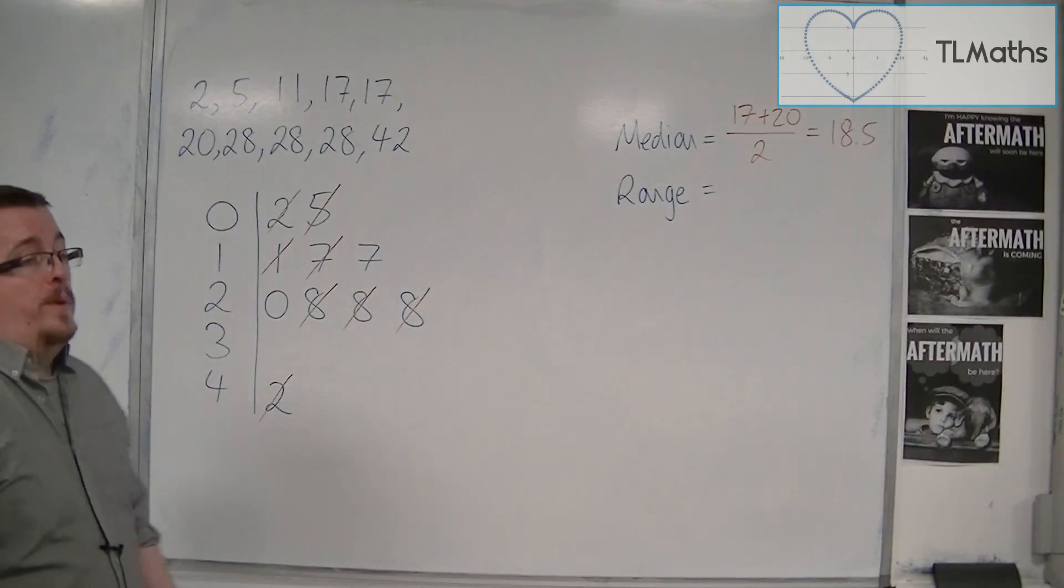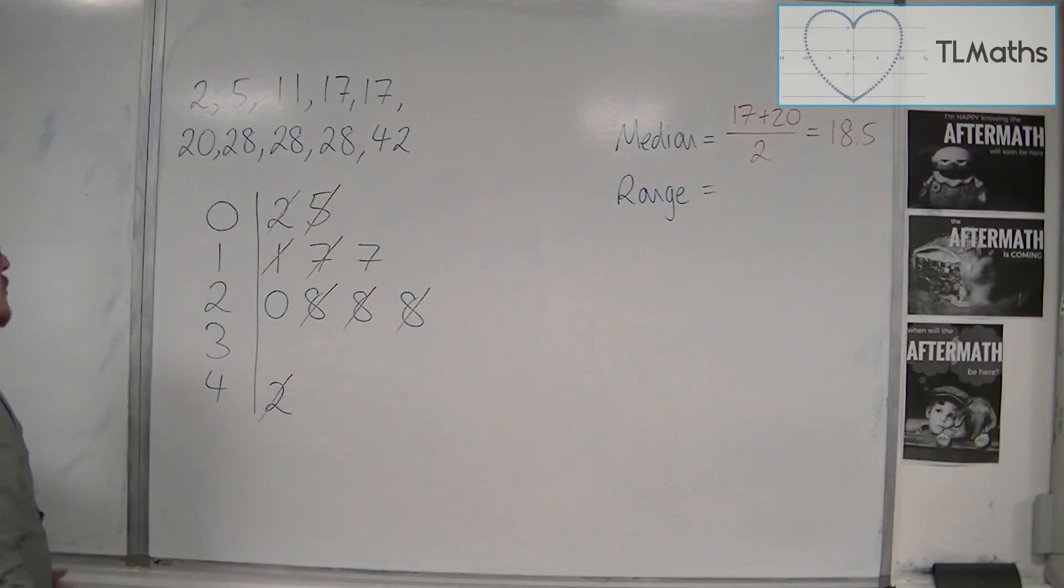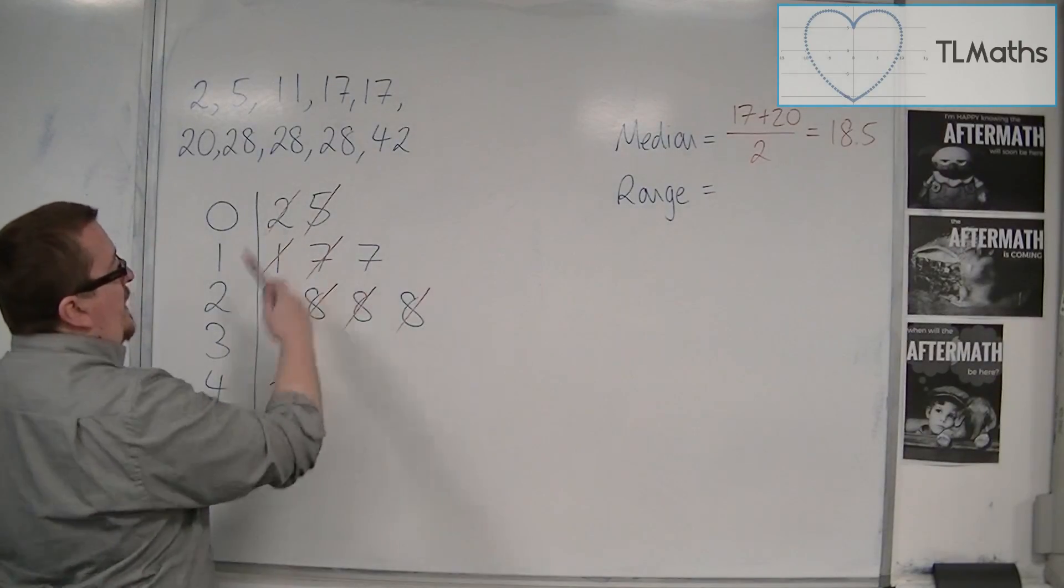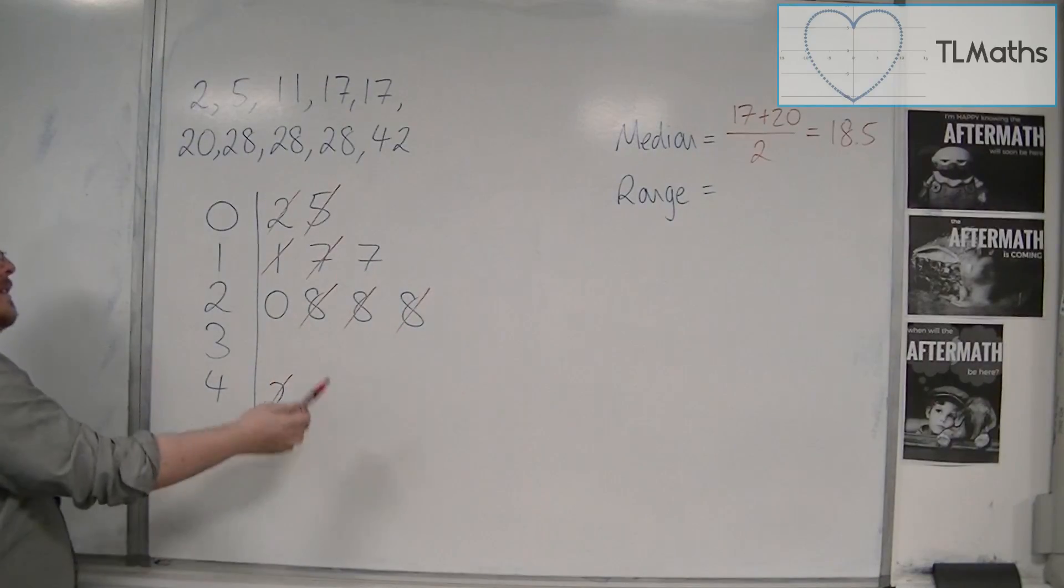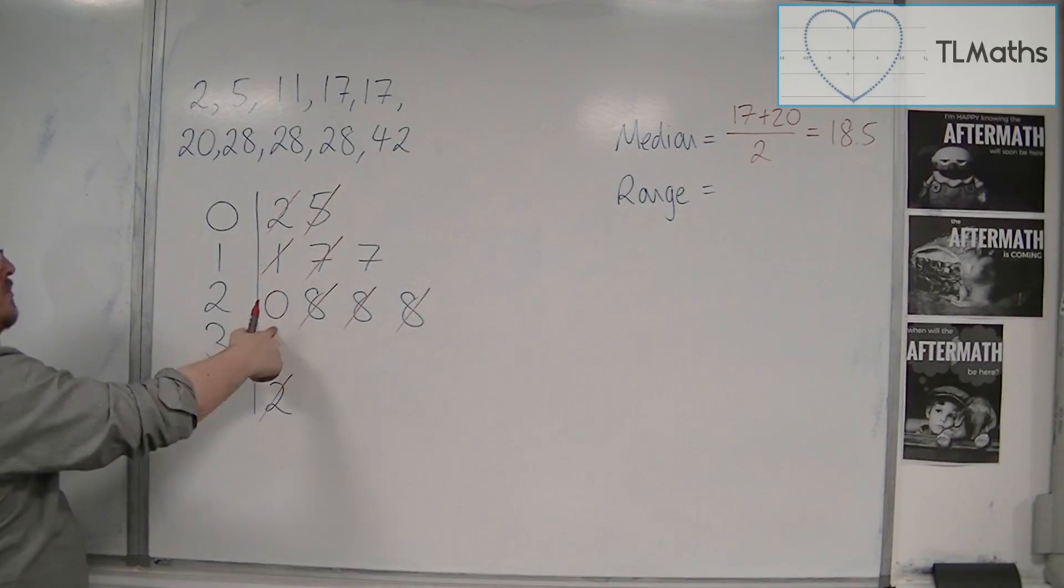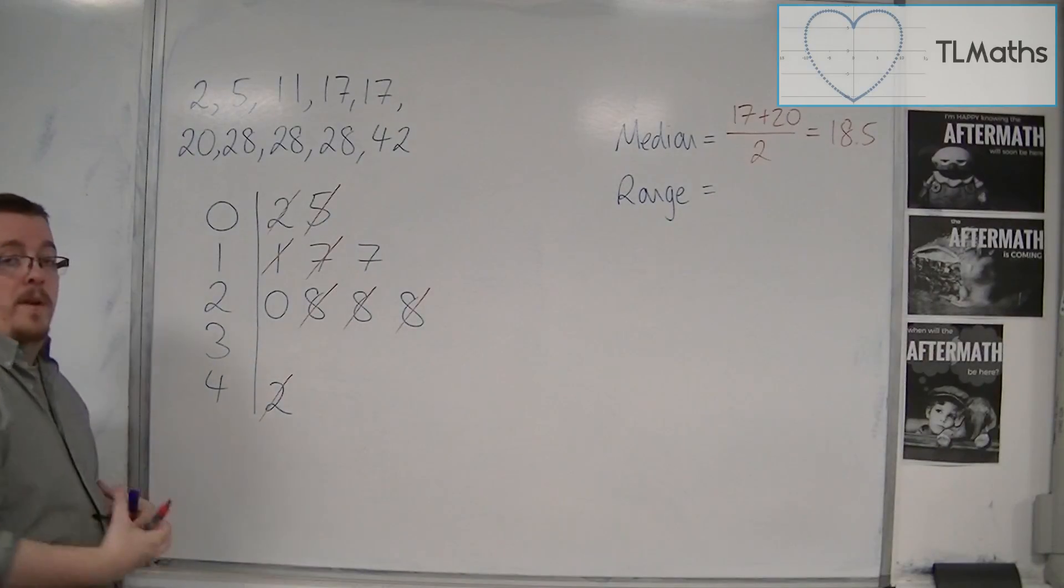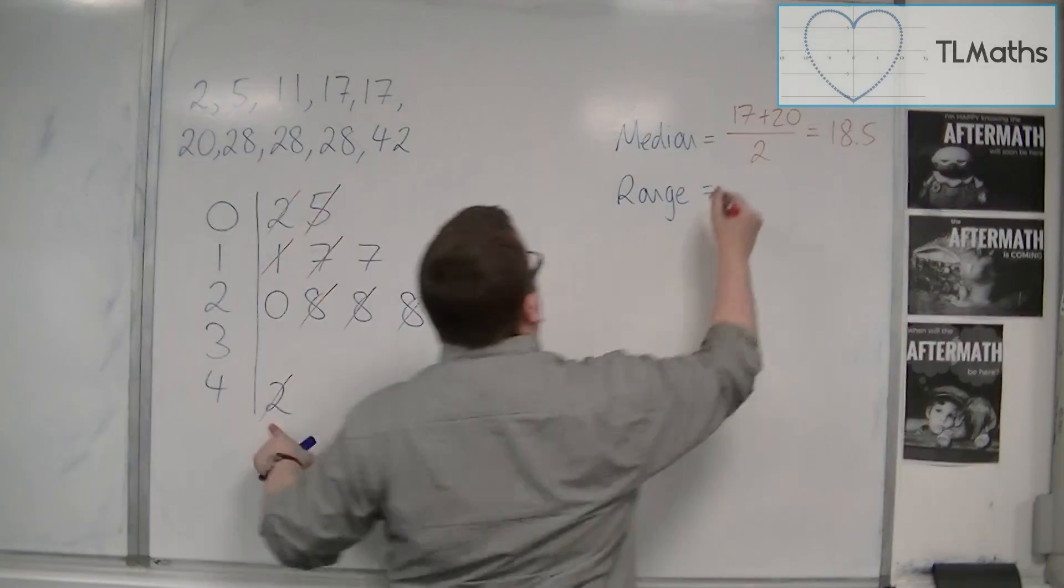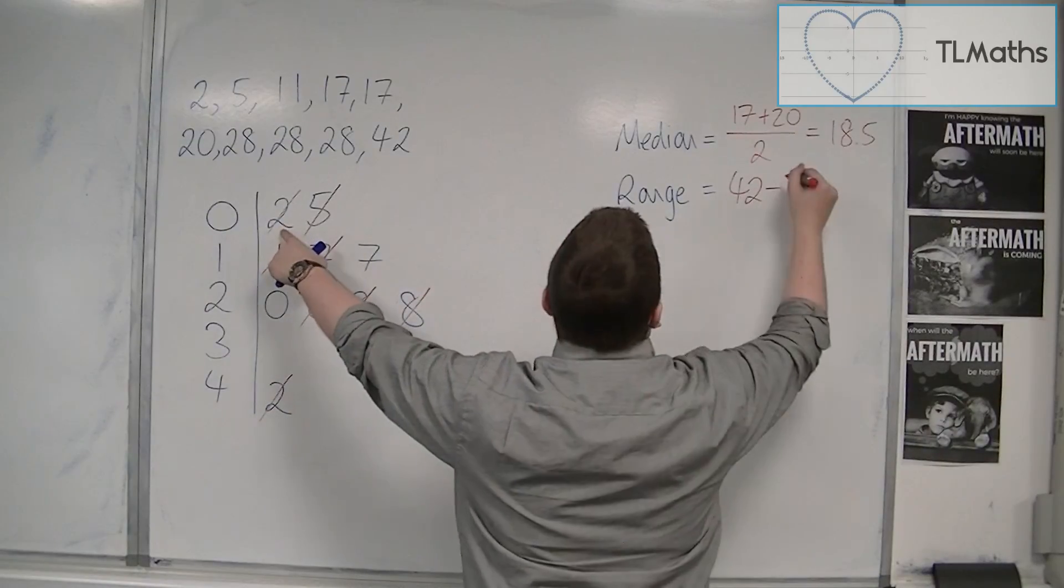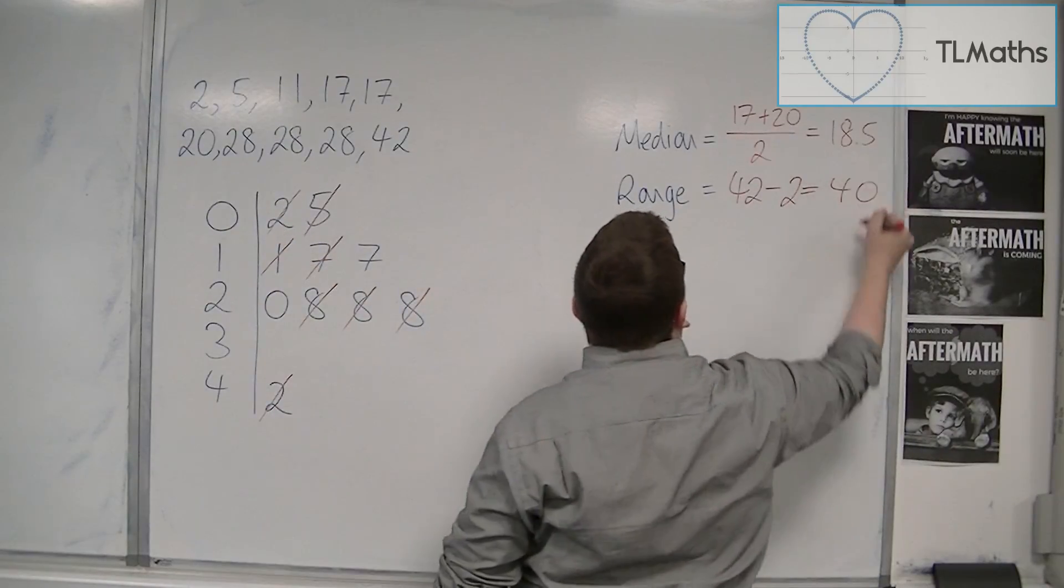Most common error with the range is to look for the largest value and think that that's 8, and then subtract the lowest value, which people then think is 0, and you just get 8. Remember that the largest value is 42, the least value is 2, and so the range is actually 40.